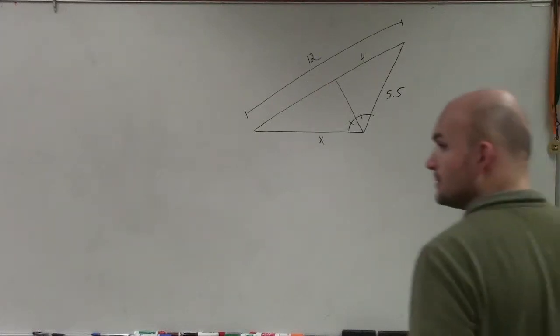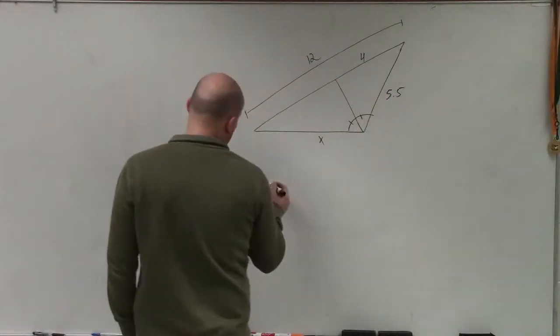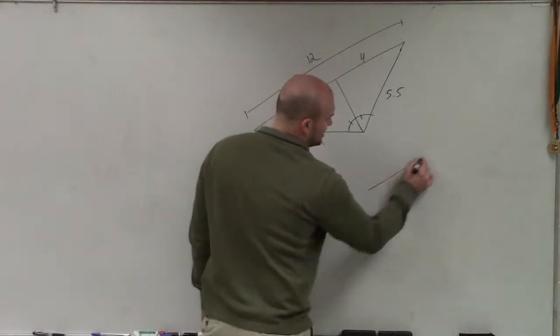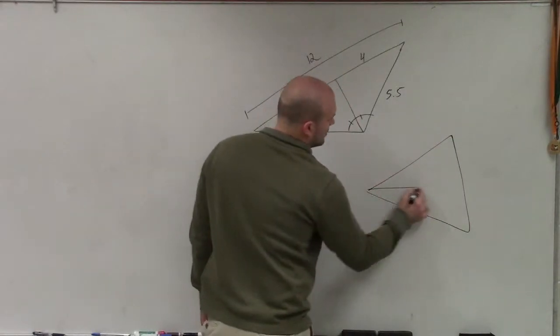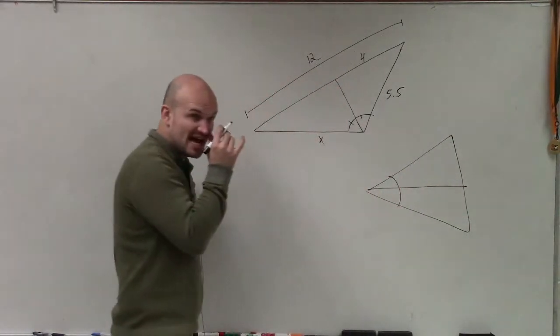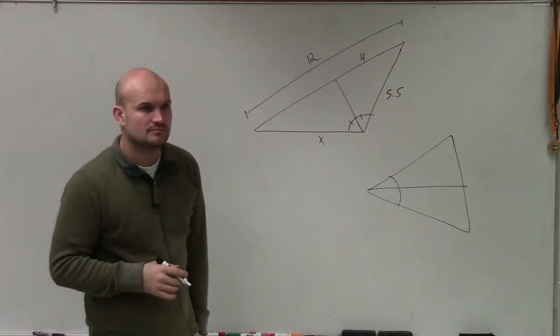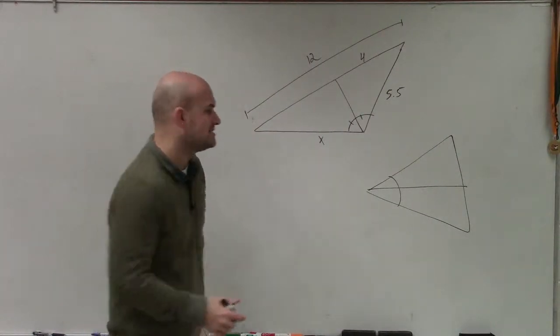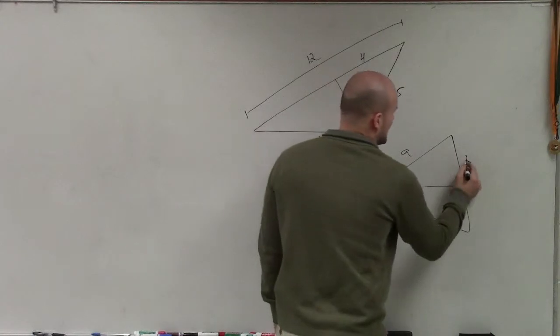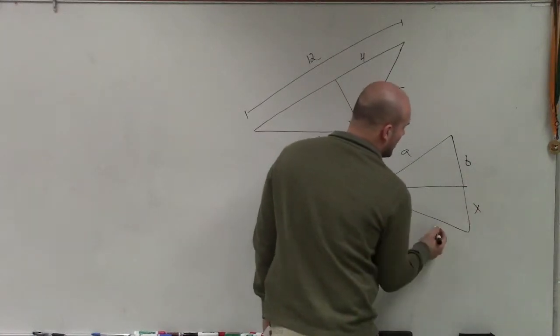Now, if you guys remember, on the triangle bisector theorem, what I stated was I had a triangle look like this. And what I said was, here's your lengths, a and b, and let's call these x and y.